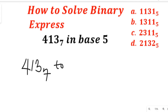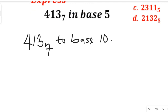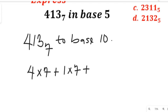To convert 413 base 7 to base 10, we are going to use the positional method. This will give us 4 multiplied by 7 to the power of 2, plus 1 multiplied by 7 to the power of 1, plus 3 multiplied by 7 to the power of 0.